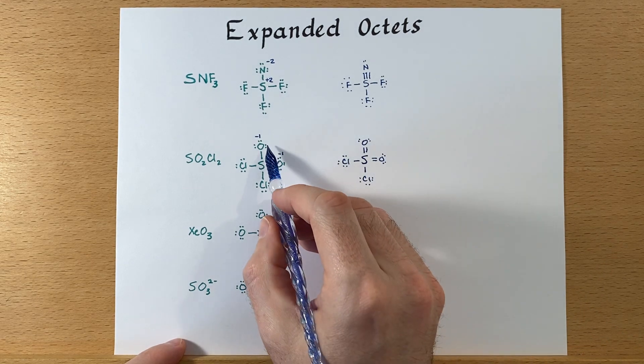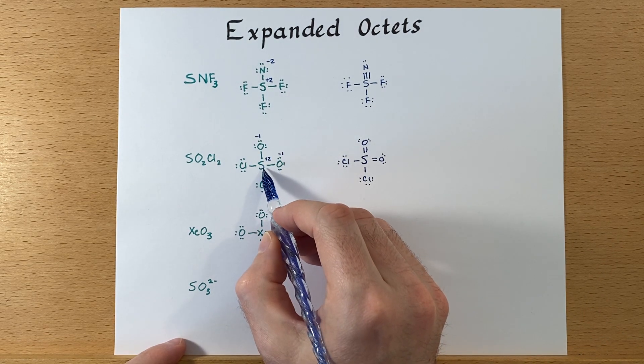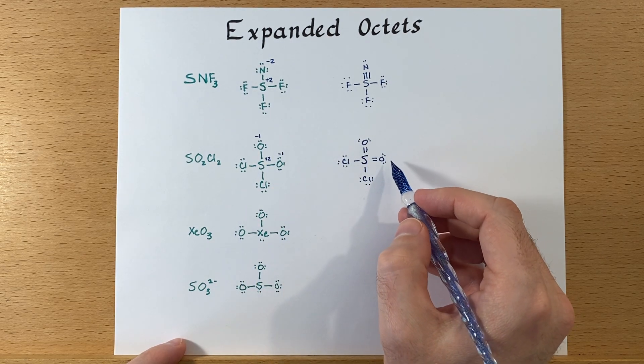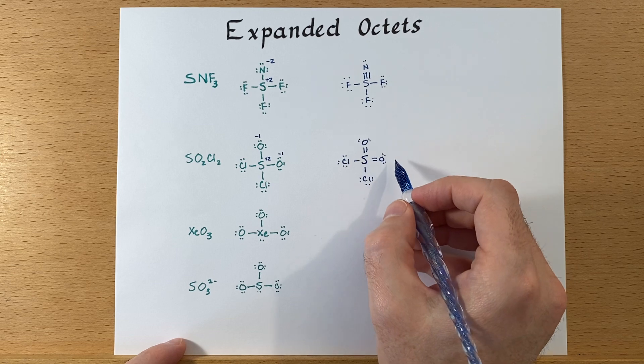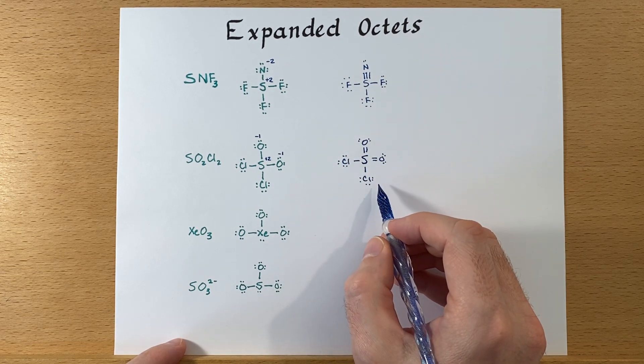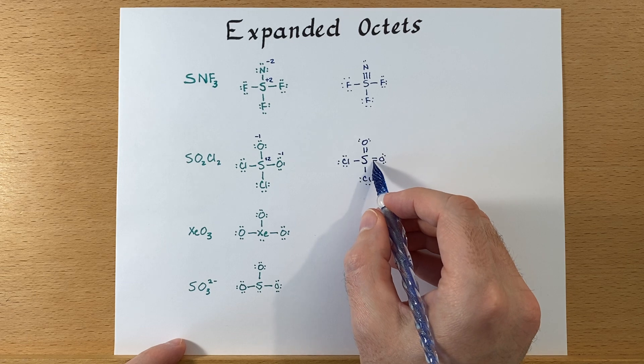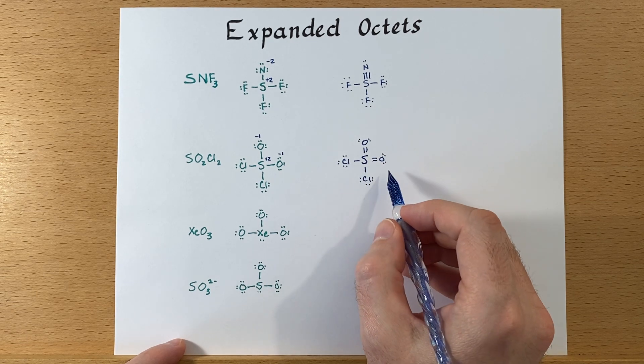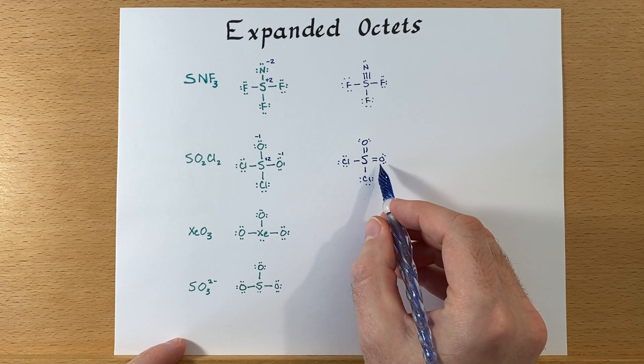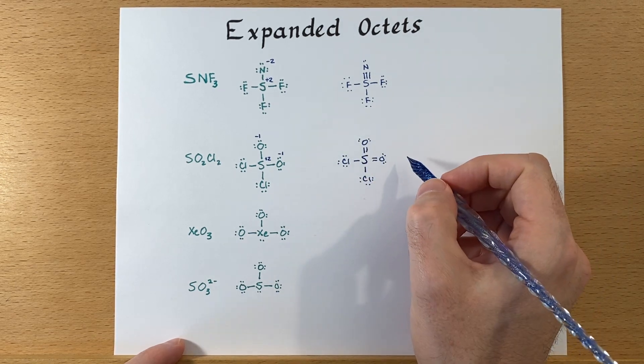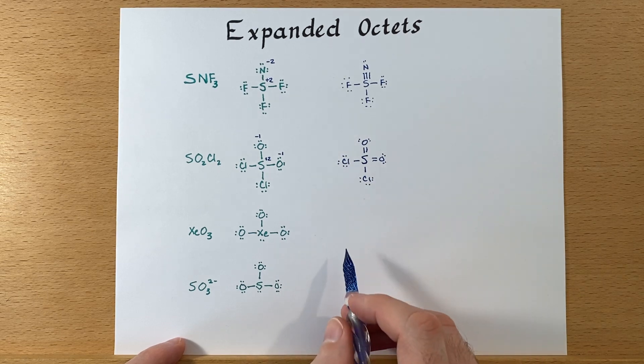We've moved one of these lone pairs in between the sulfur and oxygen in both of these cases. And now you may observe that all formal charges in this drawing are zero. Sulfur has one, two, three, four, five, six. And oxygens, we've seen a double bond to oxygen with two lone pairs, that's also zero formal charge. This is a much better structure.